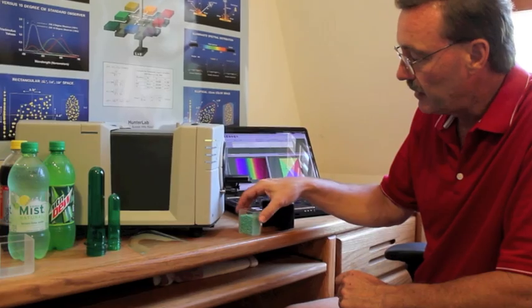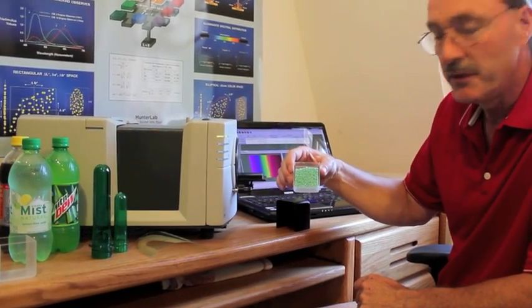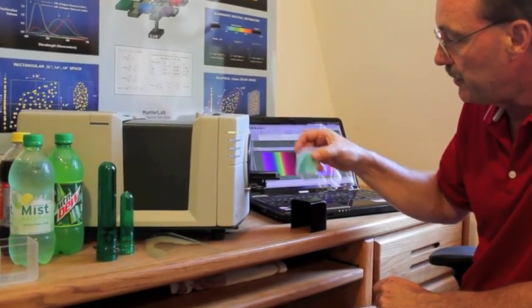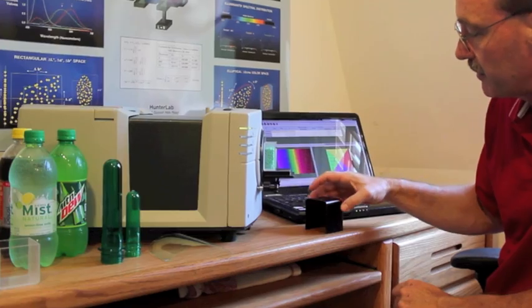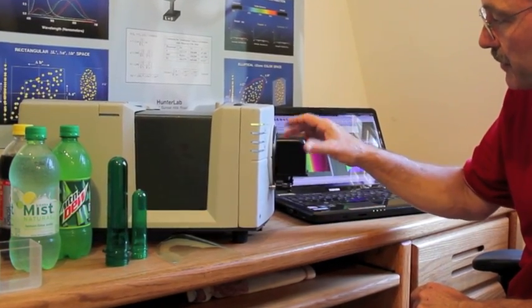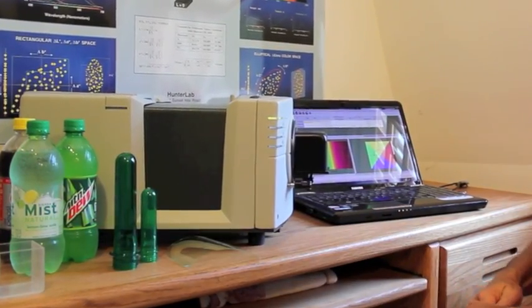When measuring the plastic resin, we place it in a clear quartz cuvette. Using large area view, we place the product in front of the spectrophotometer, cover it to shield ambient lighting, and take a reading.